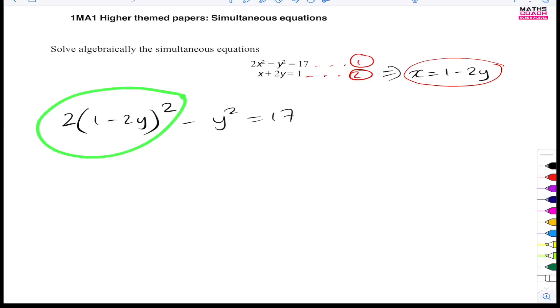Now I will expand this bracket right there. You've got to be careful here. Some students may decide to multiply the two with what's inside the bracket first. You can't do that. You've got to deal with this square. So that would be two brackets after that. So 1 minus 2y, 1 minus 2y.